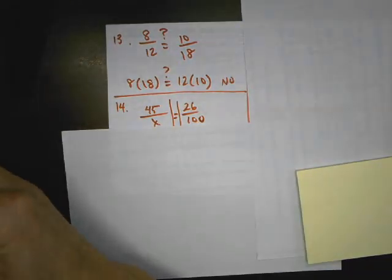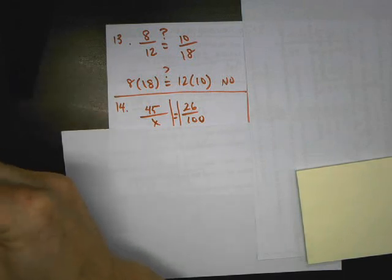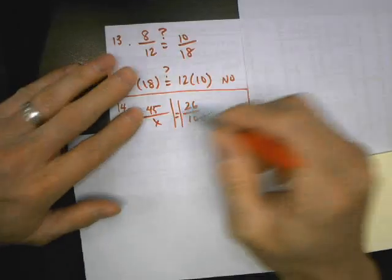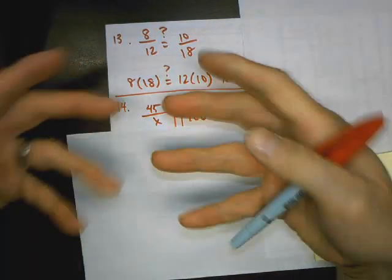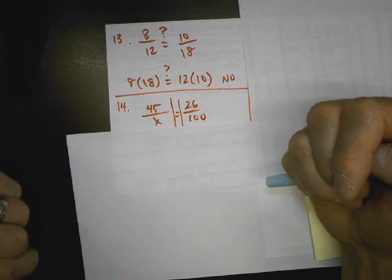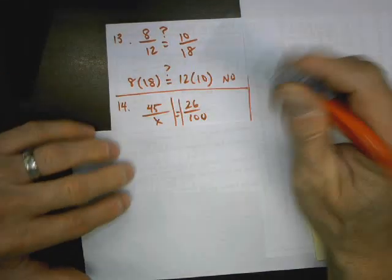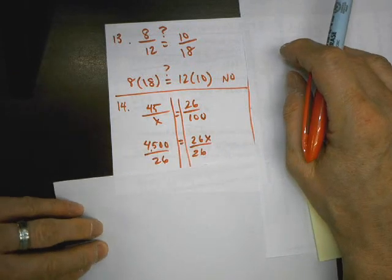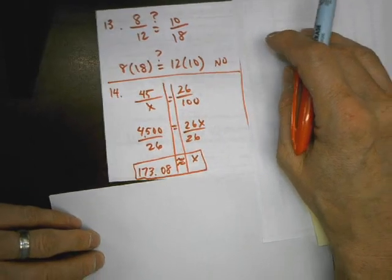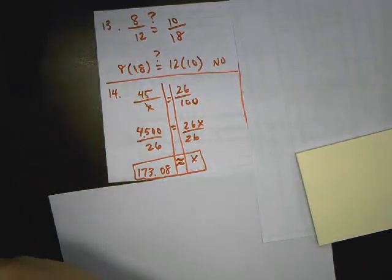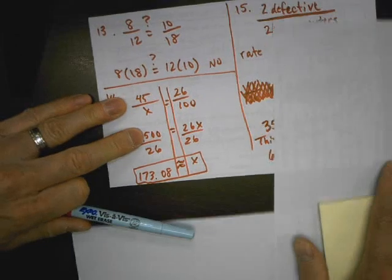14. It says 45 is 26% of what number? We're going to use a percent proportion. The percent proportion goes is over of equals percent over 100. They should be proportional. And they say 45 is, so that's why 45 goes on top. Remember, is over of. Cross multiply and divide. And I get about 173.08 hundredths. So we're rounding to the nearest hundredths per the directions.